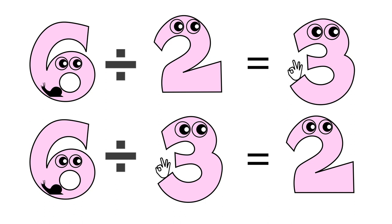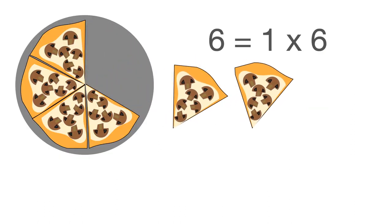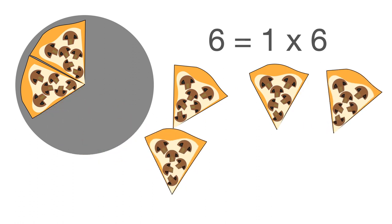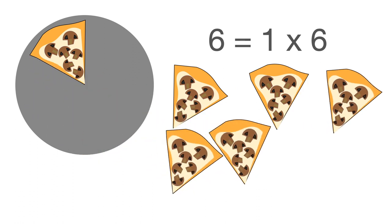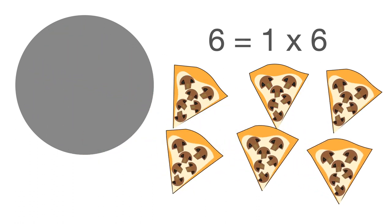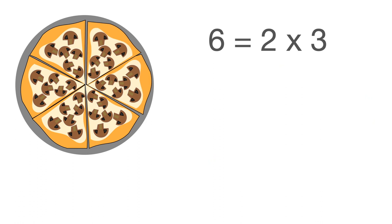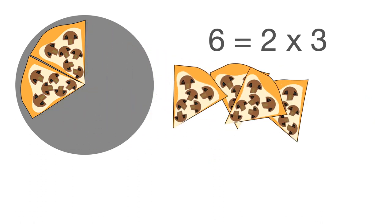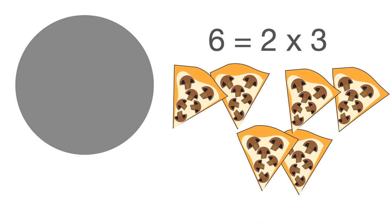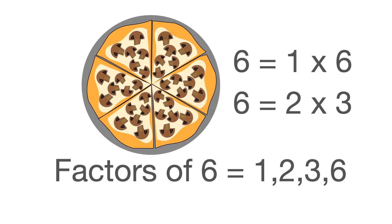Therefore, 2 and 3 are factors of 6. 1 times 6 equals 6, and 2 times 3 equals 6. The factors of 6 are 1, 2, 3, and 6. The factors divide 6 completely with no remainder.